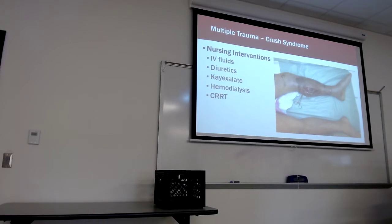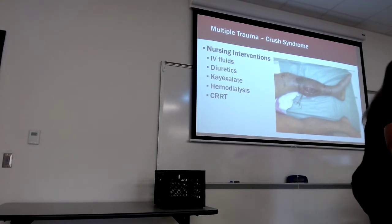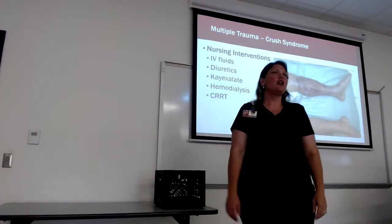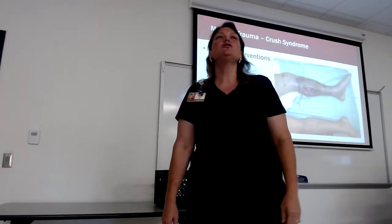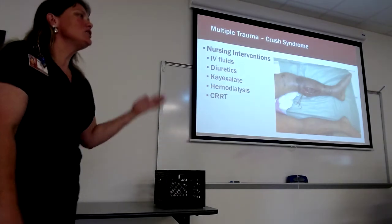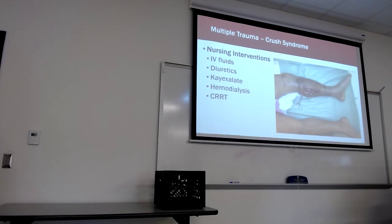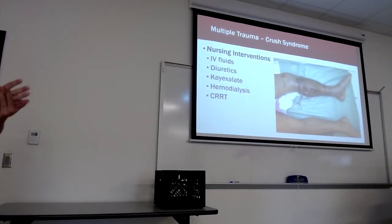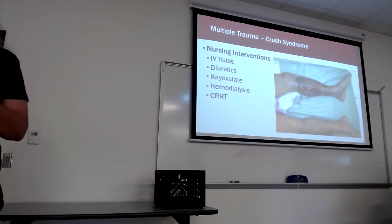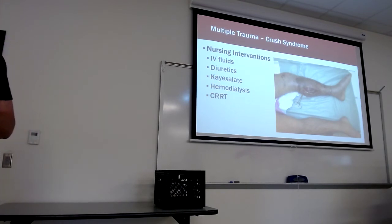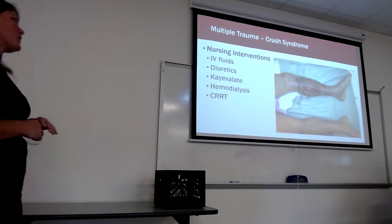Kayexalate — why do we give it? For potassium. On the floor you give it orally, but in the ER, how do we give kayexalate? As a retention enema — rectally. We put a Foley catheter behind it, inflate the balloon, and let it sit in the rectal vault. Why? It draws out potassium much faster that way. Dialysis — hemodialysis or CRRT — is also desirable, filtering out myoglobin and chemical mediators, but fluids are the primary intervention to keep those kidneys functioning.